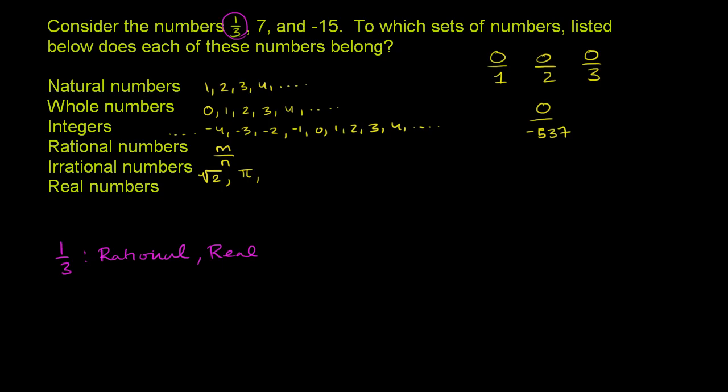Now let's try 7. So the number 7, it is a natural number. It is just a regular counting number. It is a whole number, because any natural number is also going to be a whole number. And anything that is a natural number that's also going to be a whole number is also going to be an integer. So this is also an integer.